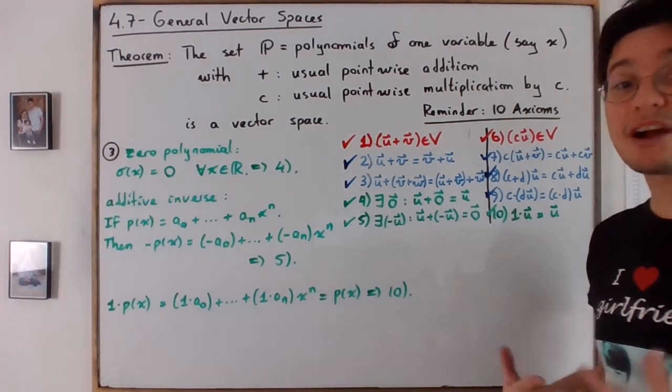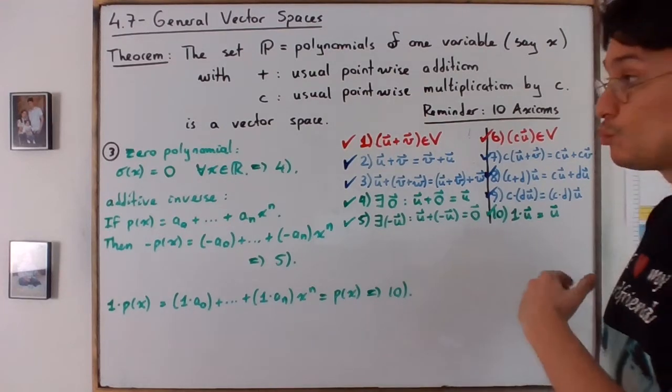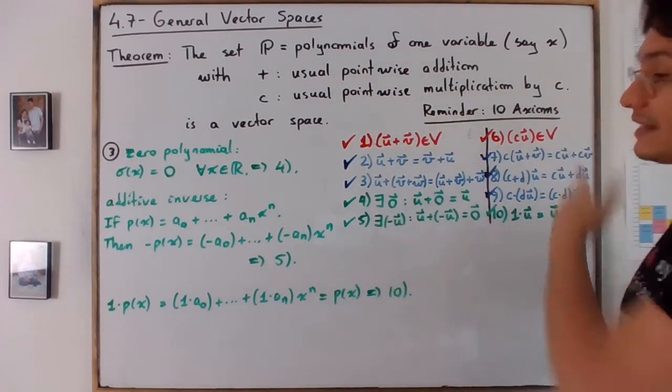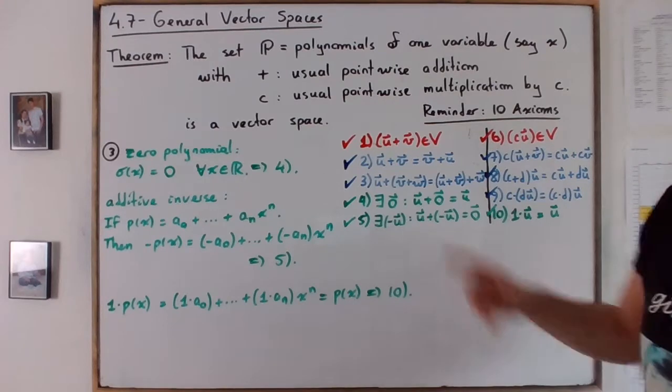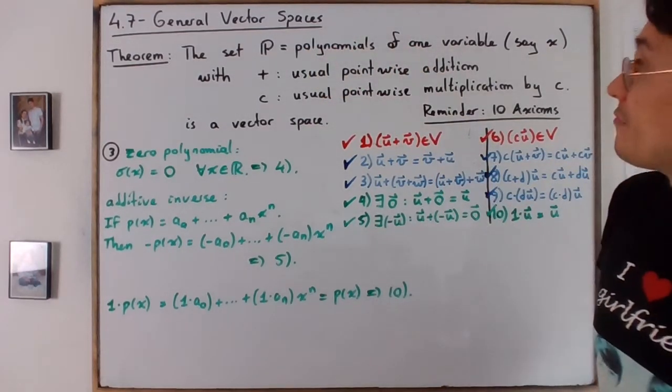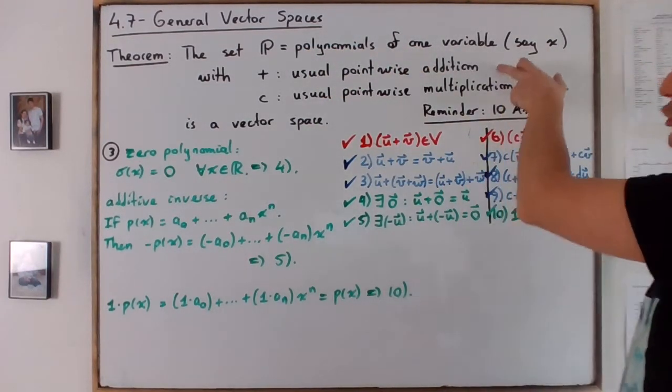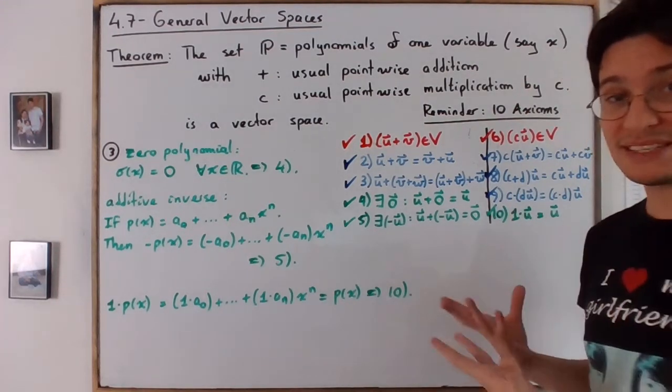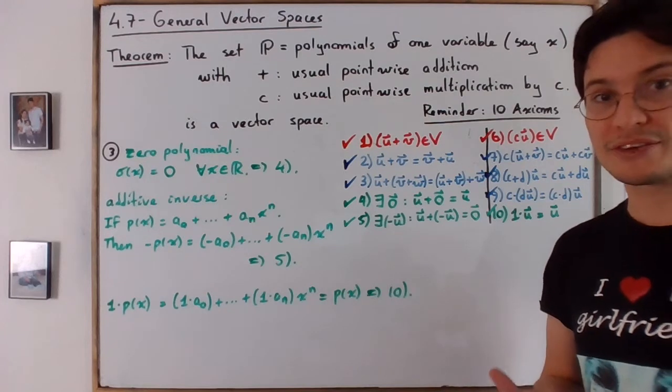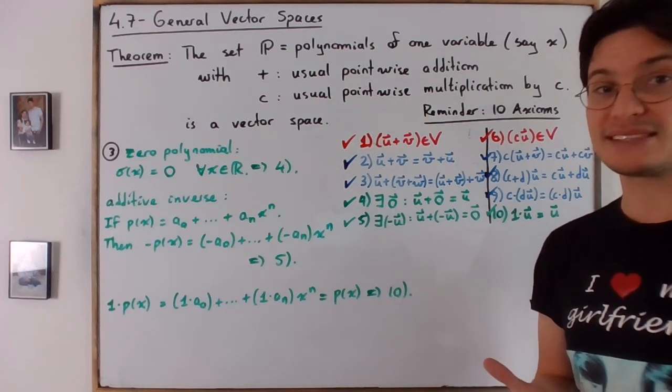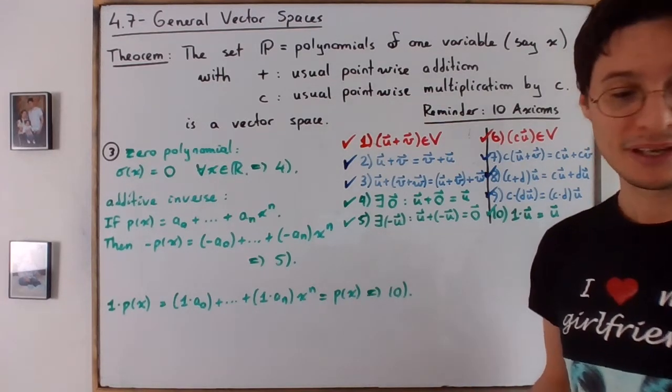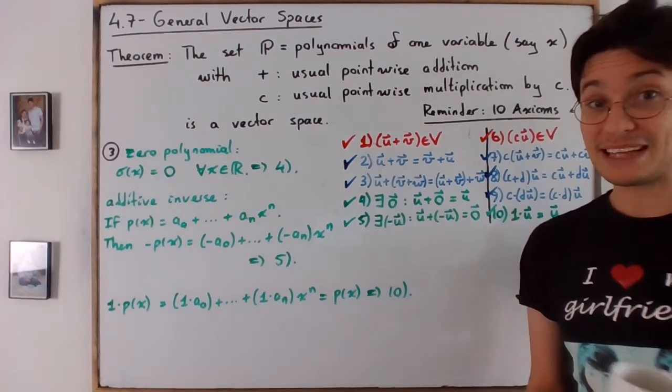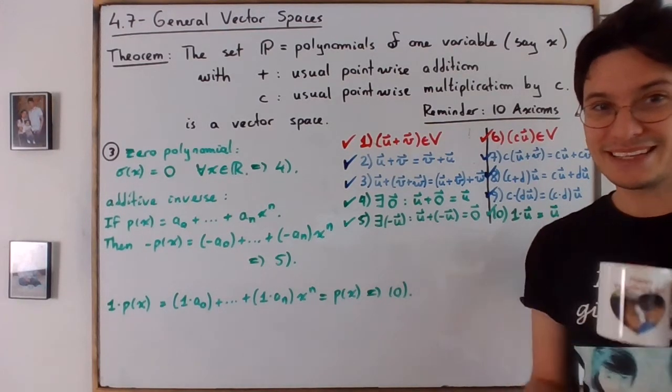And as you can see, we are done. We verified all 10 axioms, which means that the set of polynomials of one variable with the usual two operations is a vector space. So my point with this video is to help you to understand how vector spaces work, right? So hopefully that helped. See you in the next video.